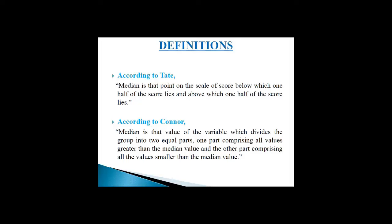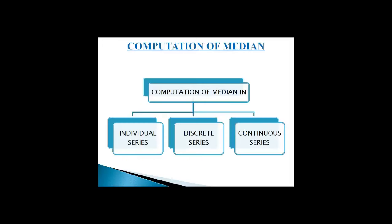According to Tate, median is that point on the scale of scores below which one half of the scores lie and above which one half lie. According to Conner, median is that value of the variable which divides the group into two equal parts — one comprising all values greater than the median and the other comprising all values smaller than the median. The median can be calculated in the following series: individual series, discrete series, and continuous series.